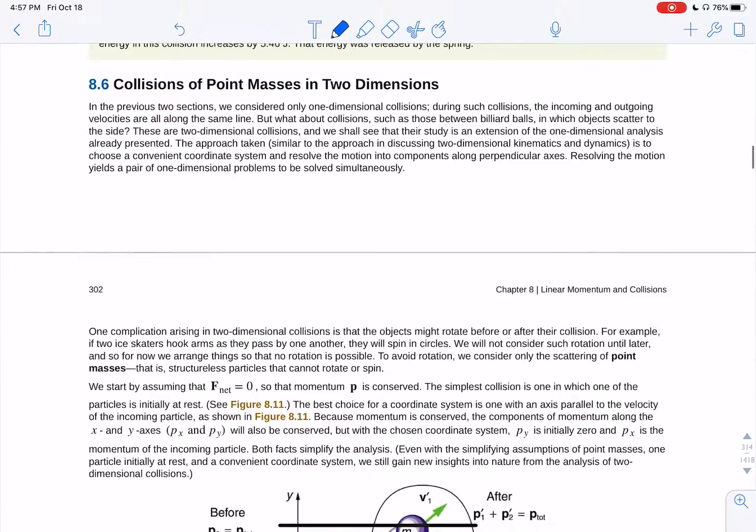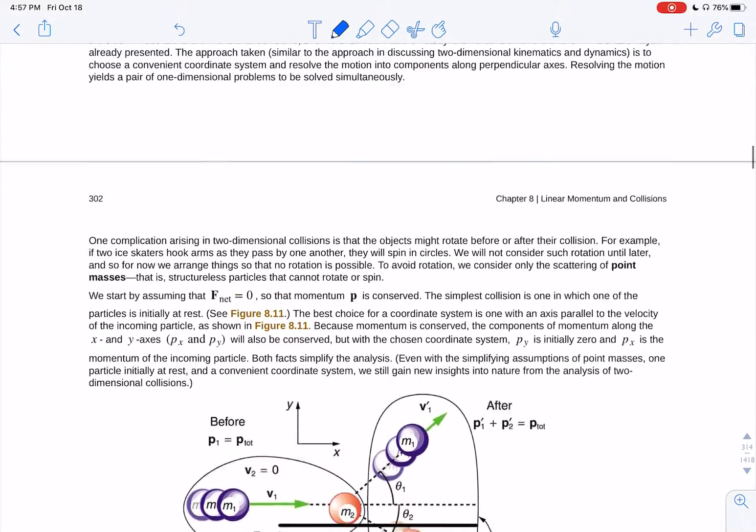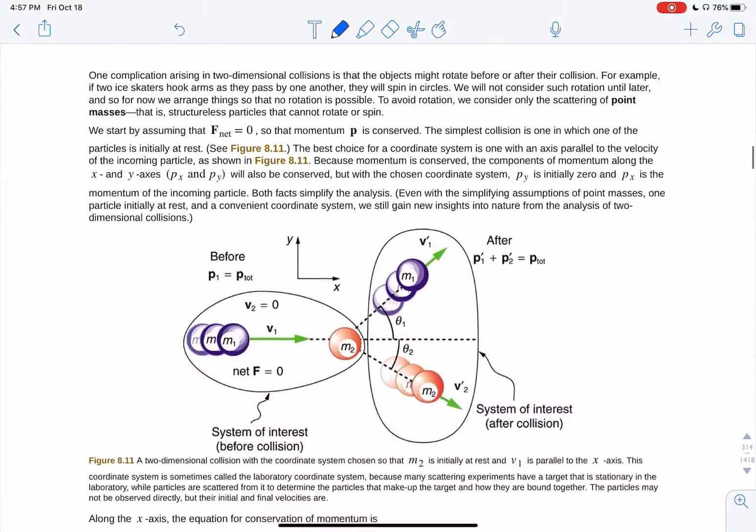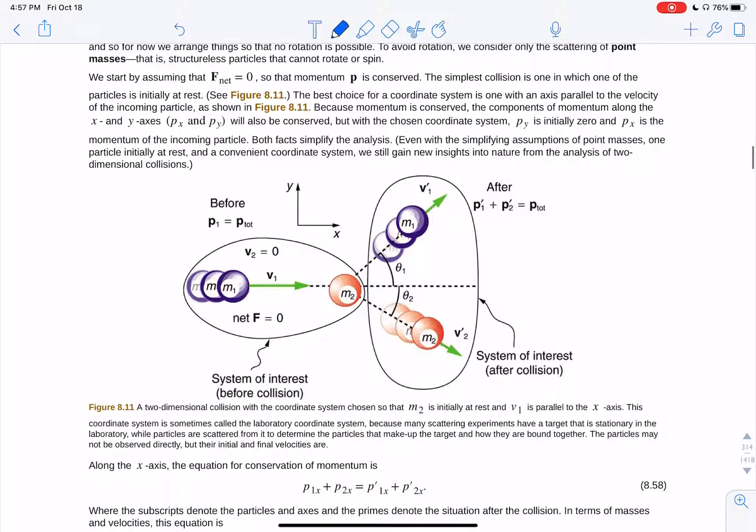Let's see. I go through those examples. 8.6 collisions of point masses in two dimensions. So in two dimensions, your balls, these two, hit, and then scatter off in two angles. So think about what you've got.